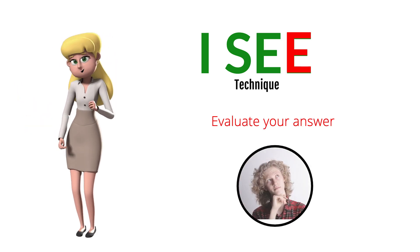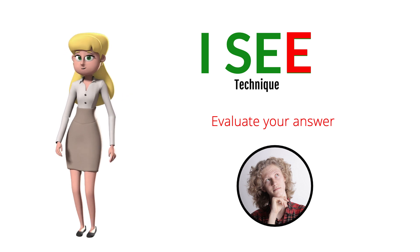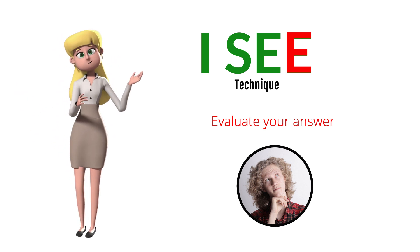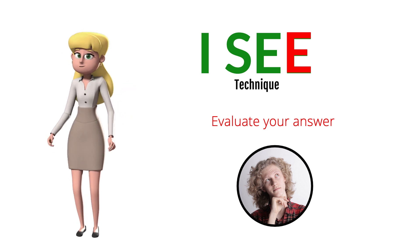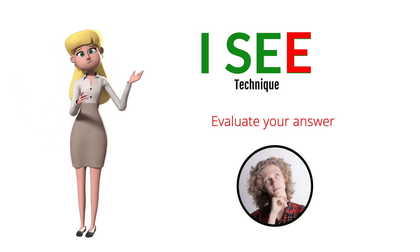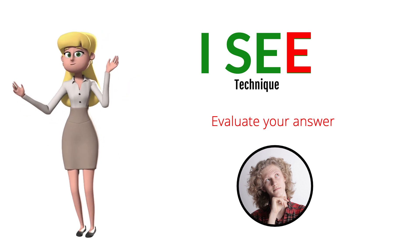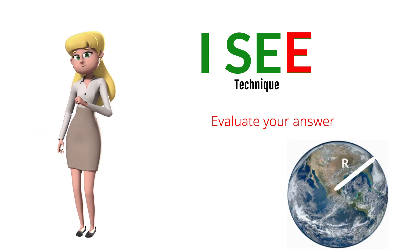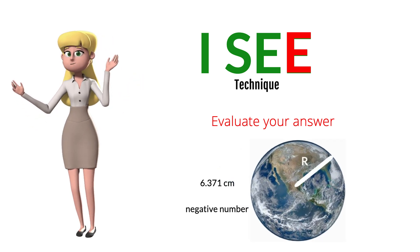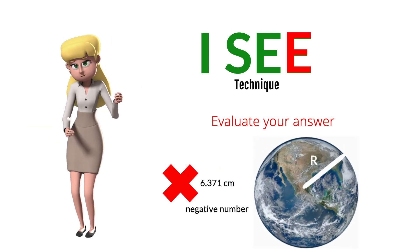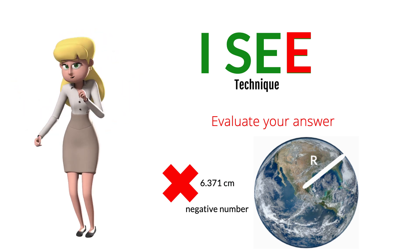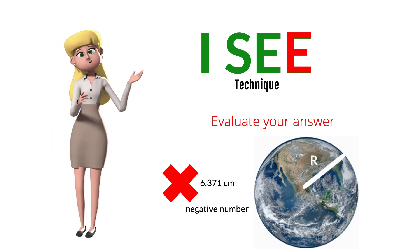Letter E: Evaluate your answer. The goal of problem solving isn't just to get a number or a formula, it's to achieve better understanding. That means you must examine your answer to see what it's telling you. Be sure to ask yourself: does this answer make sense? If your target variable was the radius of the earth and your answer is 6.371 centimeters, or if your answer is a negative number, something went wrong in your problem solving process. Go back and check your work and revise your solution as necessary.